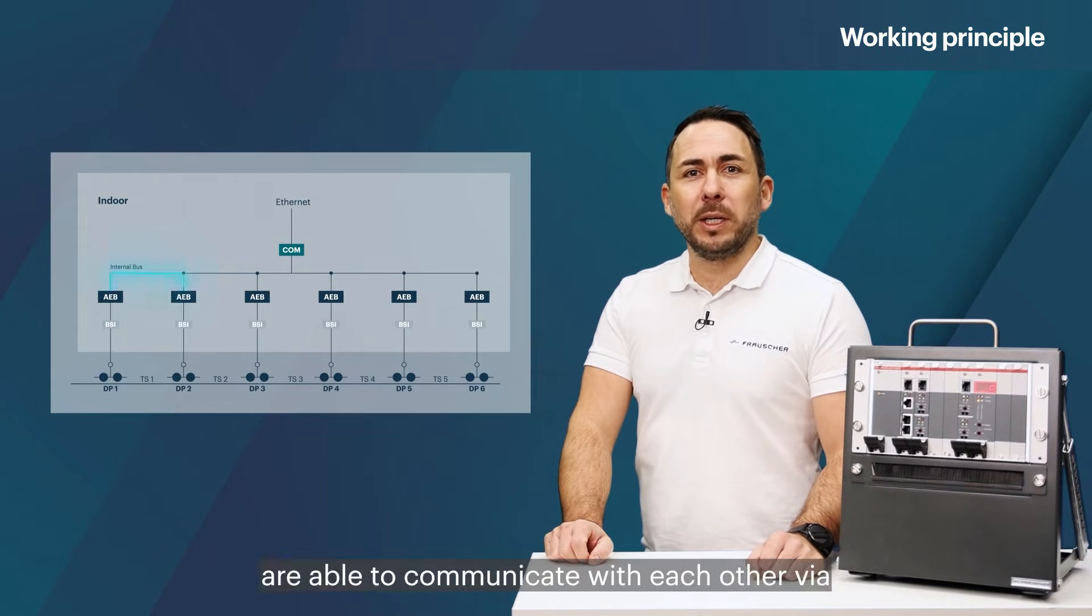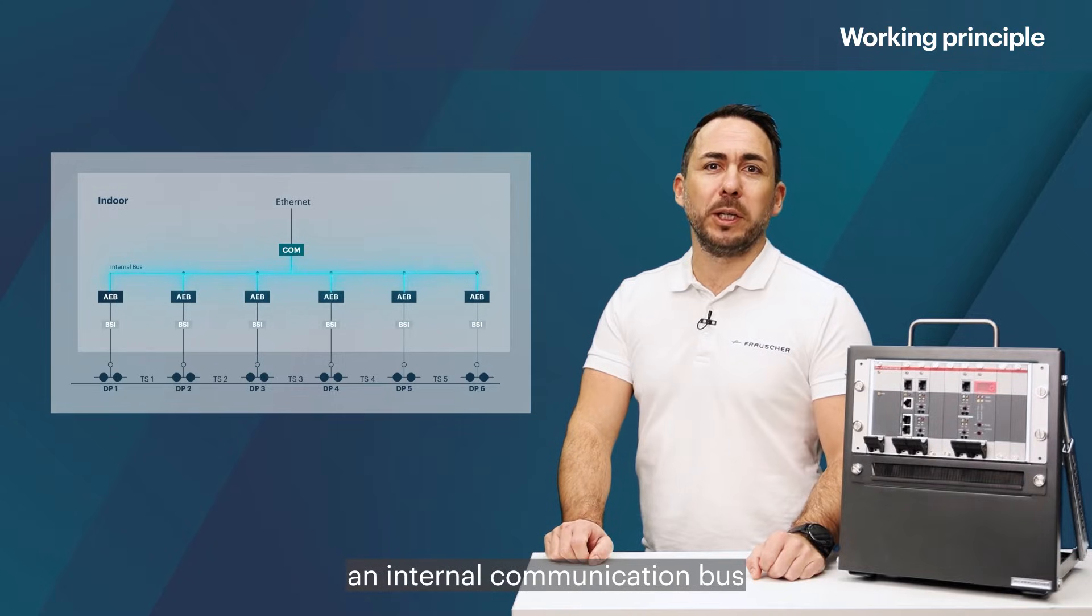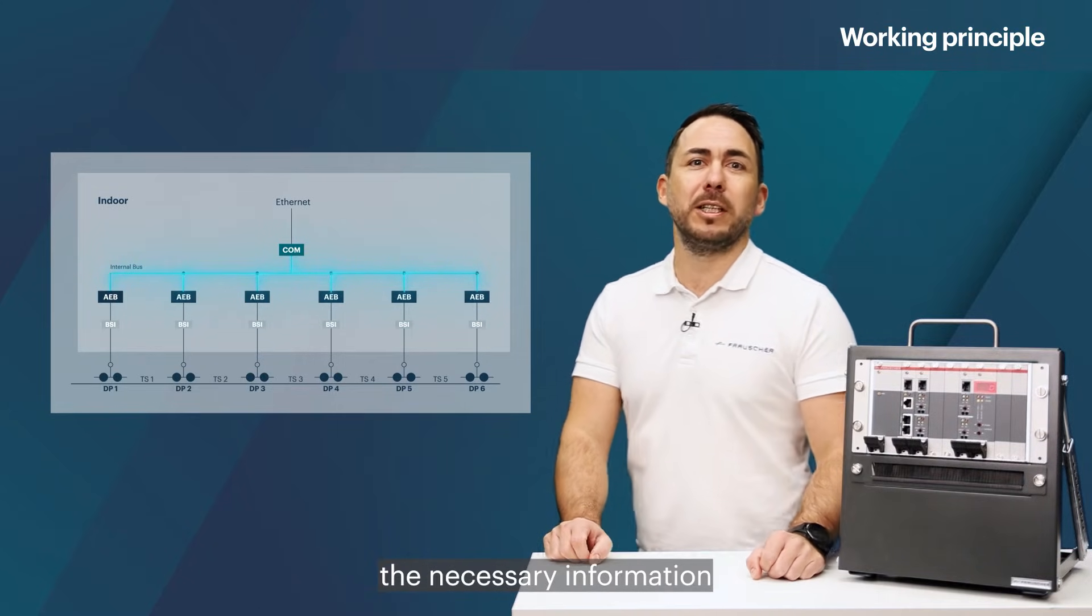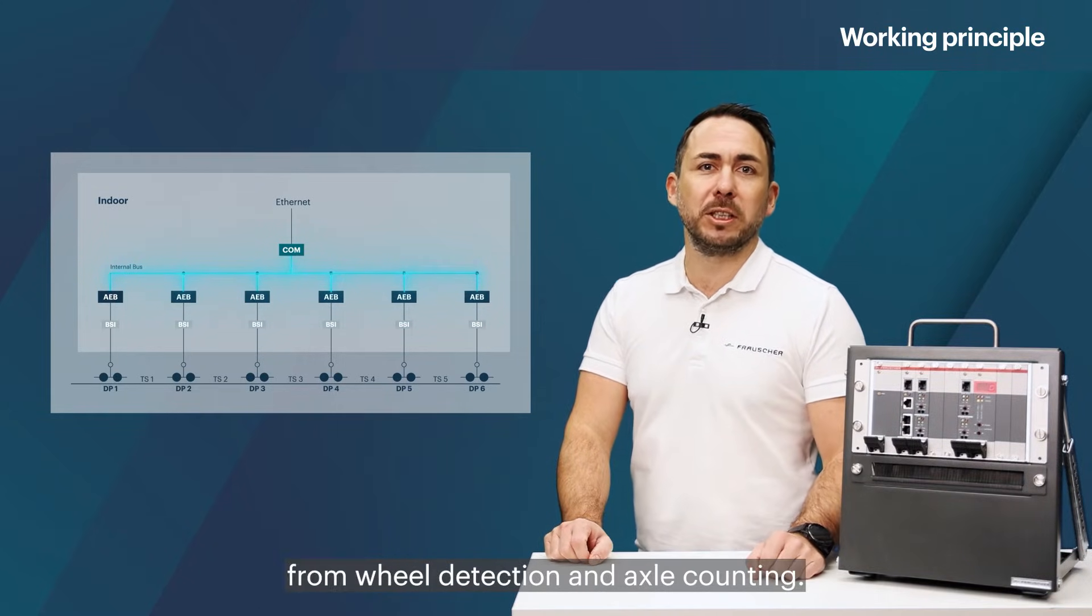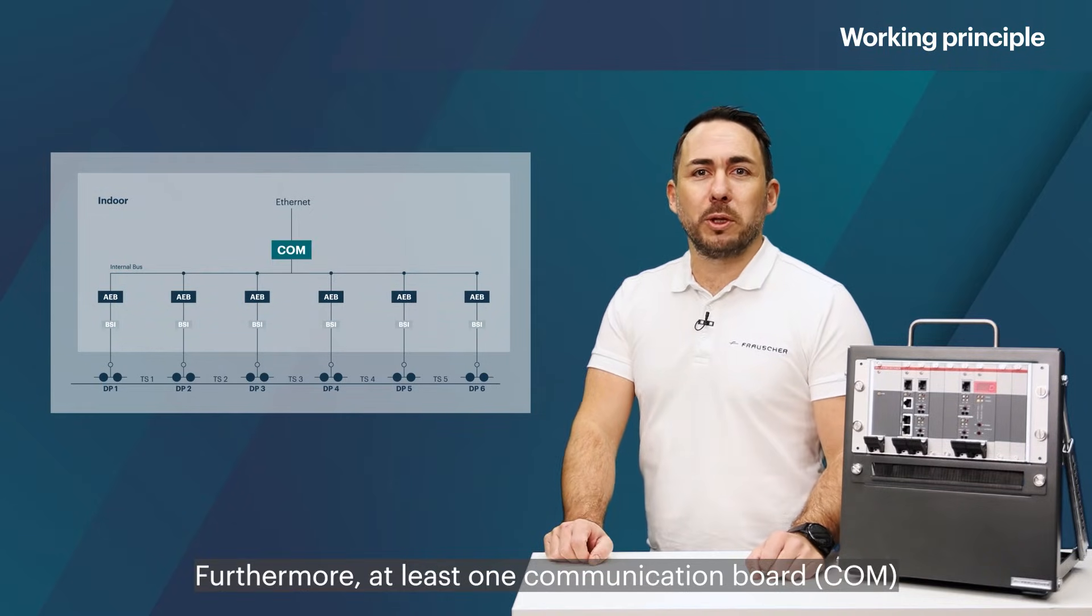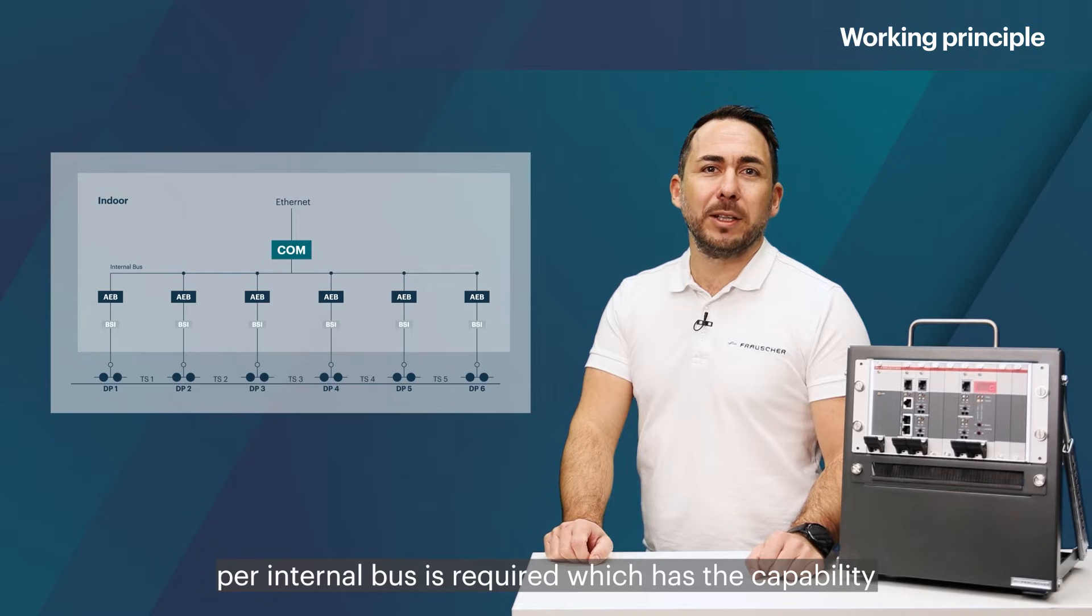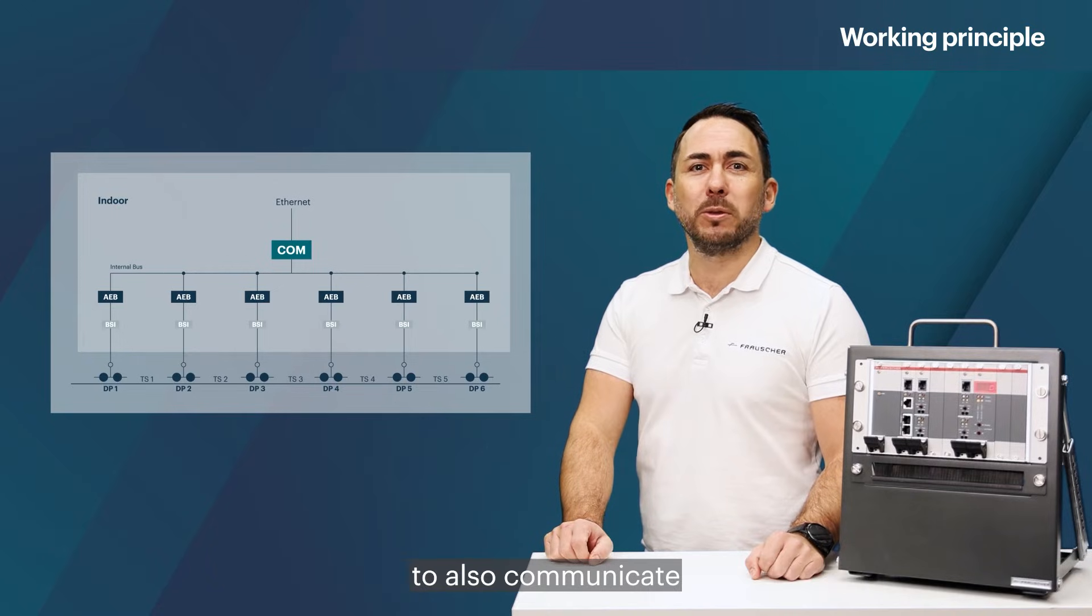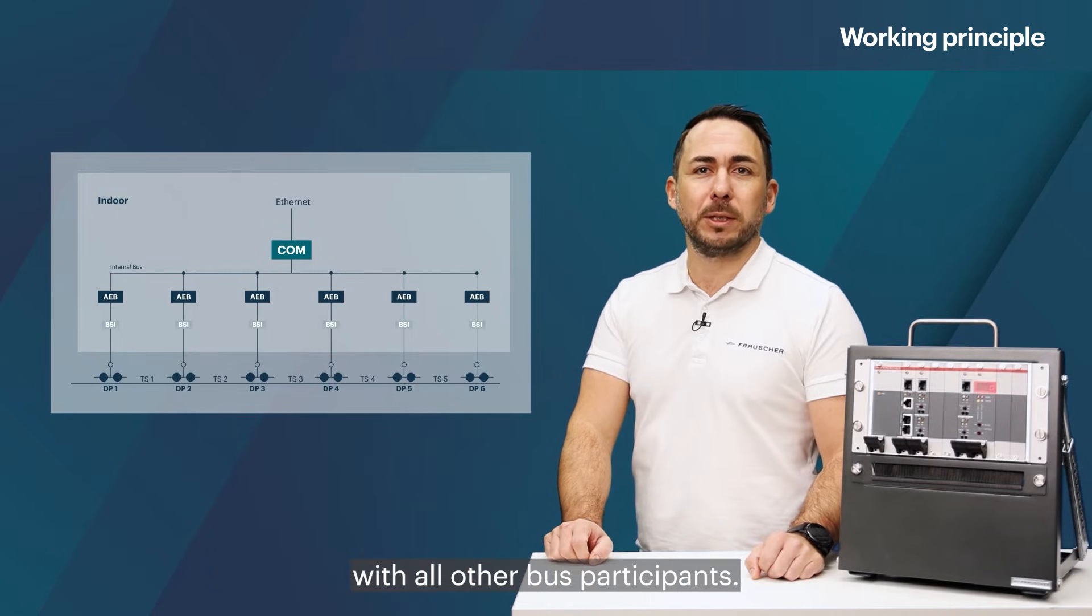All AEB boards are able to communicate with each other via an internal communication bus in order to exchange the necessary information from wheel detection and axle counting. Furthermore, at least one communication board COM per internal bus is required which has the capability to also communicate with all other bus participants.